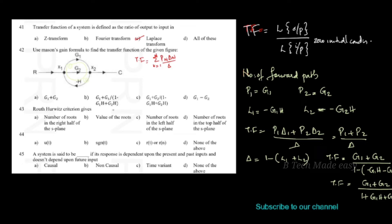Looking at the options, the transfer function equals G1 plus G2 divided by 1 plus G1·H plus G2·H. That is the correct option.